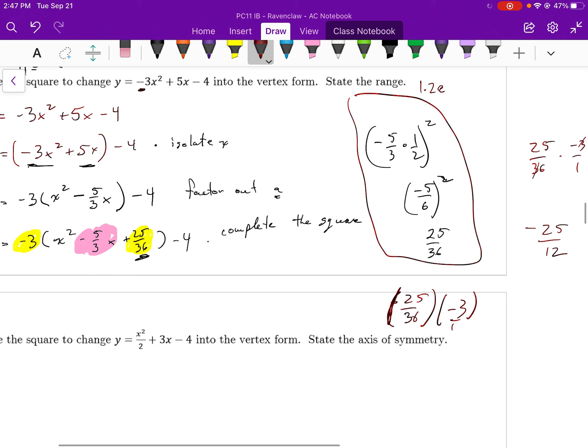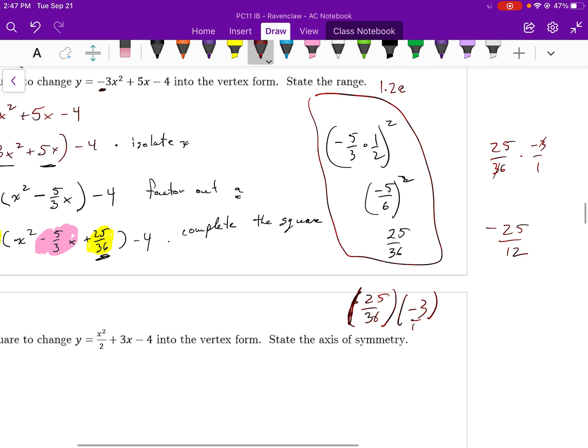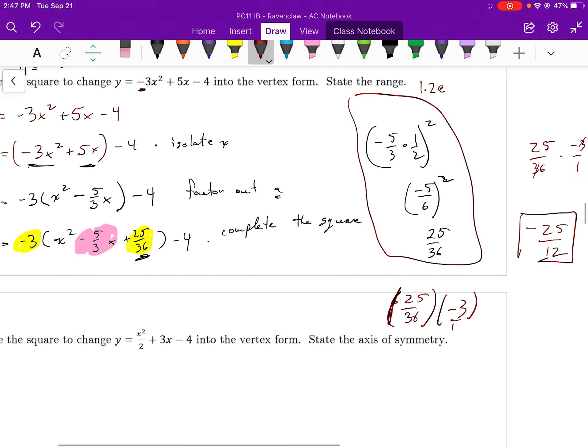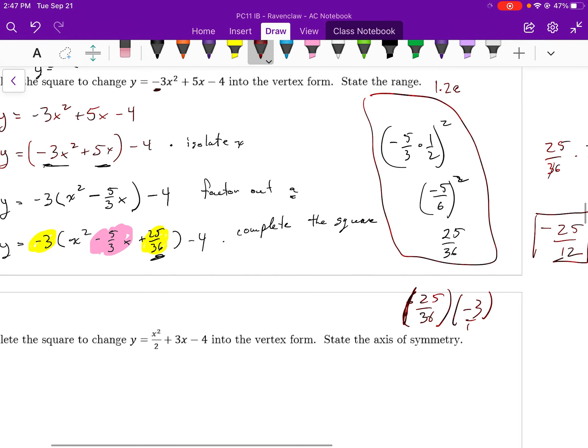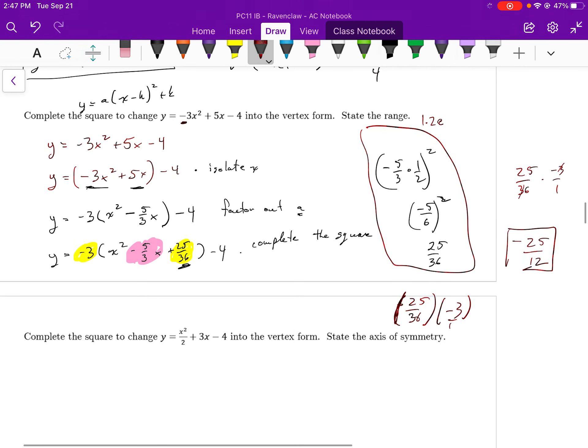When you do it, you probably get negative 75 over 36, and you would have to reduce by a factor of 3. I just took a factor of 3 from both top and bottom. So I actually added negative 25 over 12 to the right-hand side. So I'm going to make sure that I add the positive, because I need to make sure that it is 0 that I'm adding.